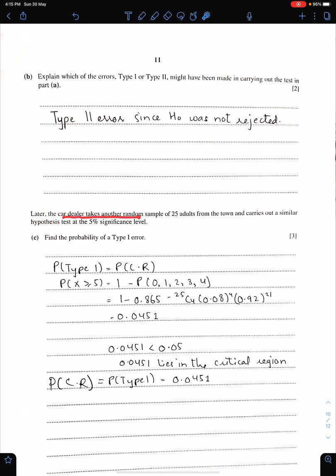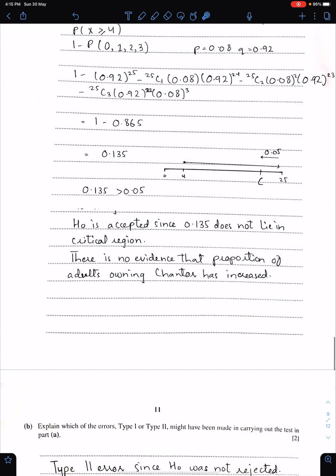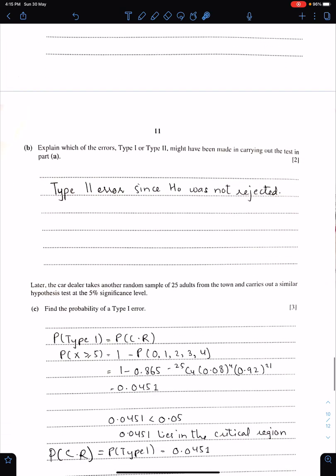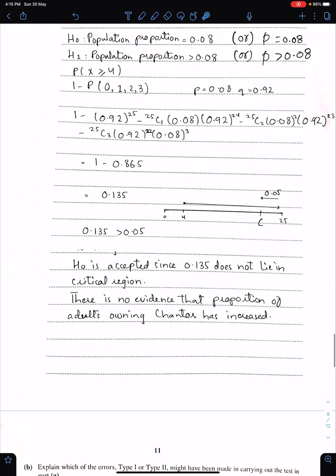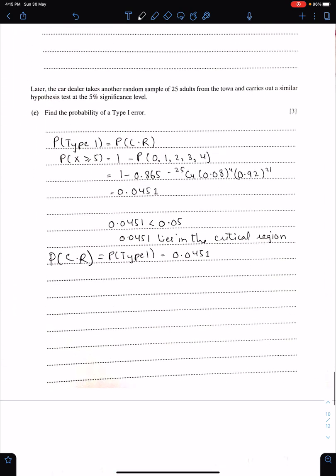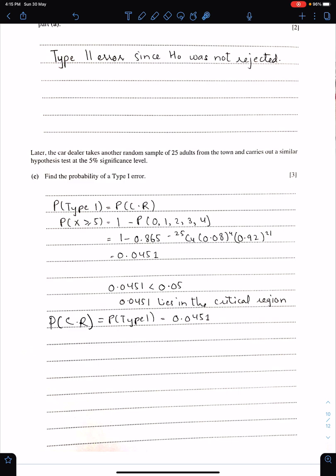Later, the car dealer takes another random sample of 25 adults from the town and carries out a similar hypothesis test at 5% significance level. Find the probability of a Type 1 error. The probability of Type 1 error is the probability of critical region. You just need to find the critical region. See, 4 is not in critical region. You should now check 5. So you can do this by trial and error method. So let X be 5. So this probability is 4.51%. Therefore, 5 lies in critical region. 5 is here. Therefore, critical region is 5 or more. Hence, probability of Type 1 is the probability of critical, which is this.